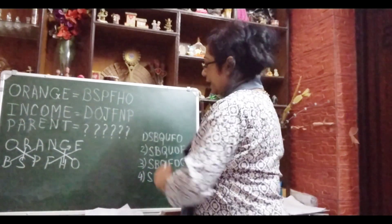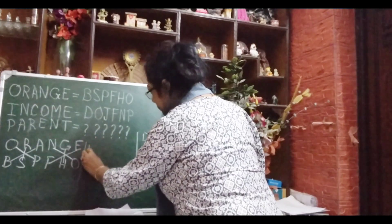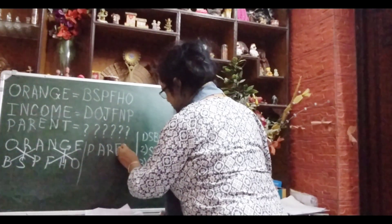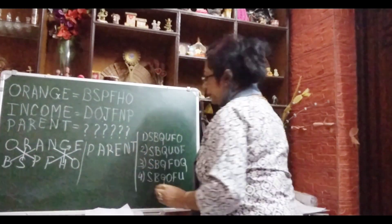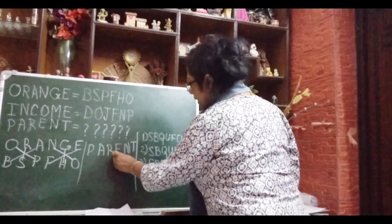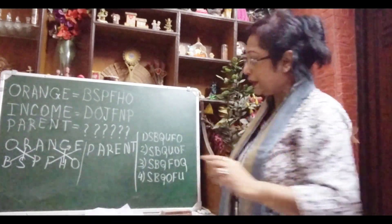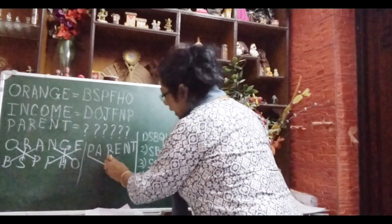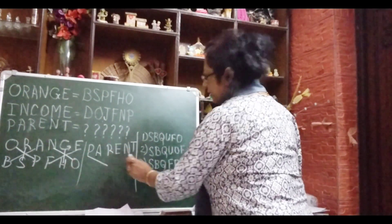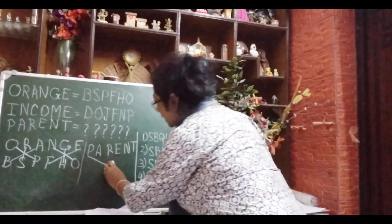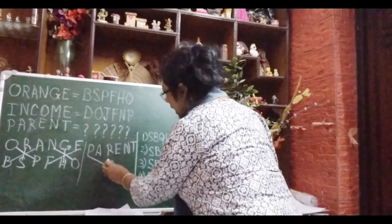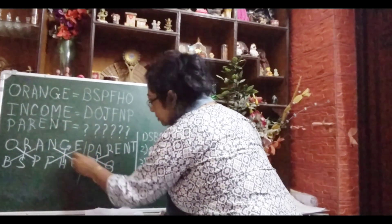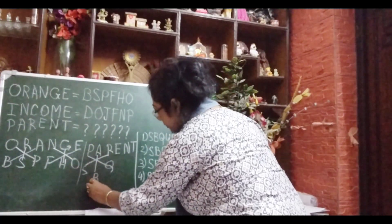Now we will apply the same code here. Let me write P-A-R-E-N-T. I have written 'parent.' Now we apply the same code. After P, what comes? Q. So write Q here. Cross out P, write Q. Then R — after R what comes? S. Cross R, write S. After A what comes? B.